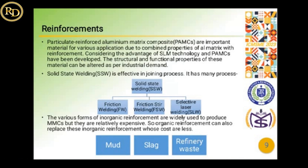Especially solid-state welding methods are effective for joining, such as friction welding, friction stir welding, and selective laser welding. Selective laser welding is a novel welding process currently being investigated for use in the near future. Inorganic reinforcements such as oxides, nitrides, and carbides are mainly used nowadays but are highly costly. Efforts are being made to use organic reinforcements that are less costly, using materials like mud, slag, and refinery waste for effective aluminum matrix composites.